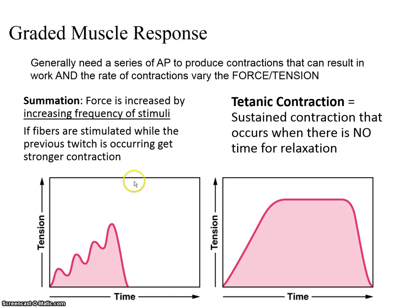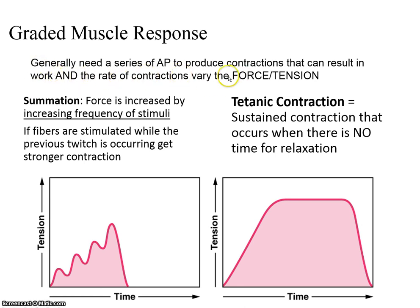Muscles have different responses depending on stimulation. If you have a series of action potentials resulting in contractions and those contractions cause the muscle to work, varying the rate of contractions can vary the force. Here we're demonstrating what's called summation.